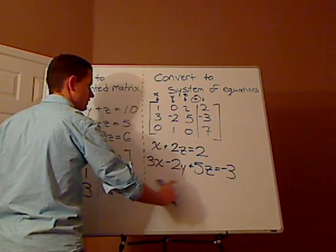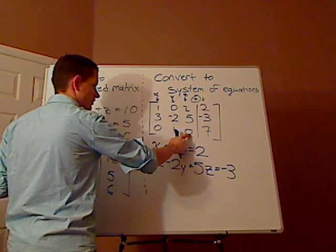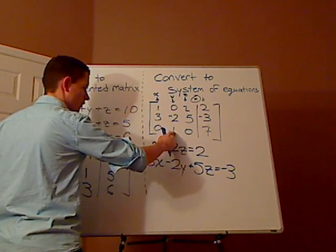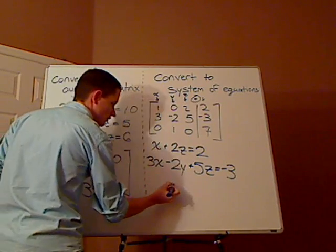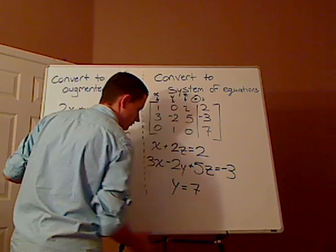Now for the third and last equation, notice that there's not going to be an x, and there's not going to be a z. So there's going to be a y, but there's a 1 there. So it's just going to be y equals 7.